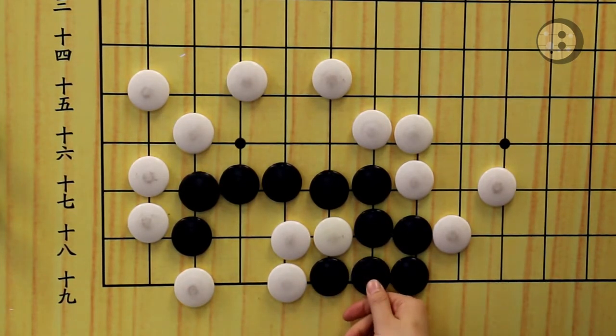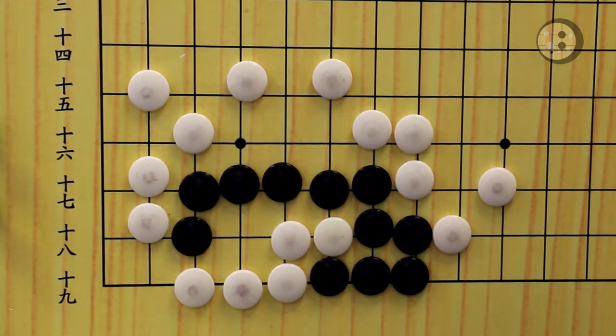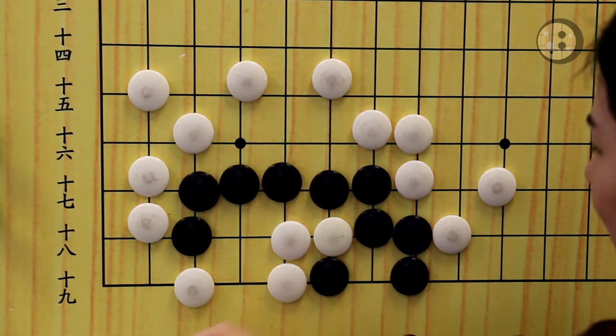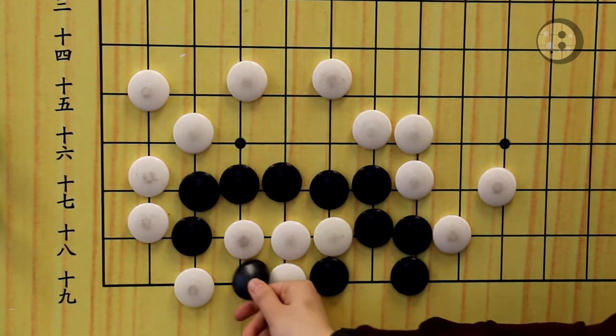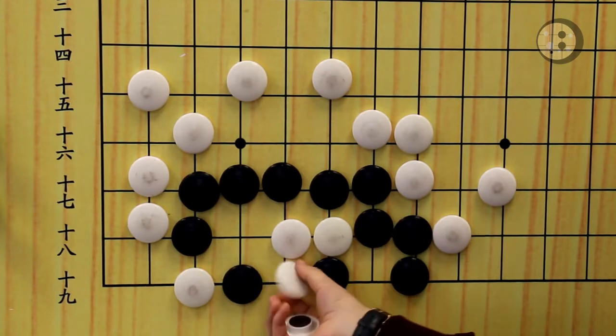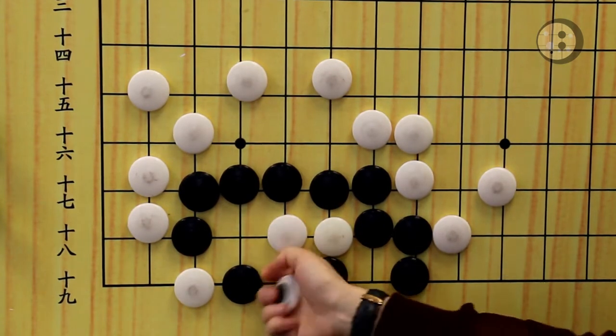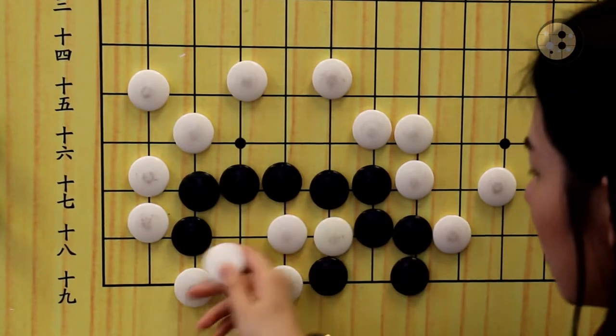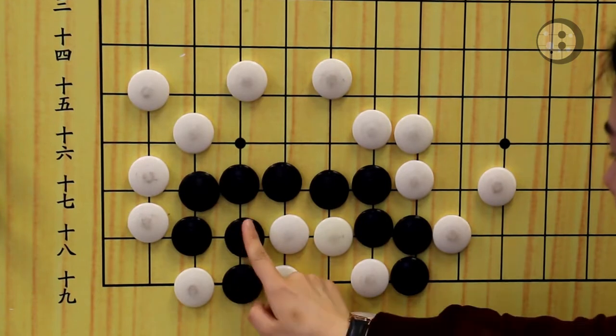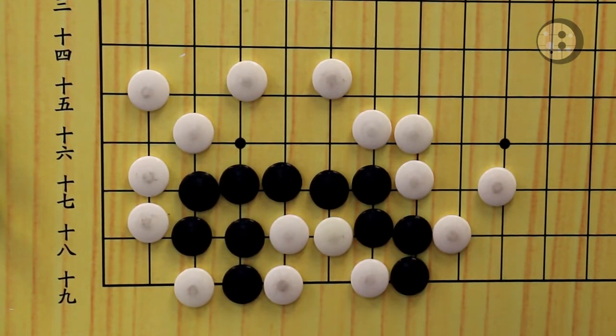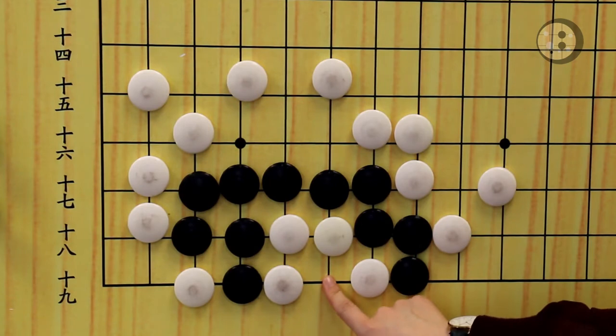If white wants to destroy the eye by atarying here, make sure you're not going to connect because that will be a mistake. White is able to connect these three stones, so black is dead now. Instead of connecting, you can throw in here and make white to a snap back. Now you can capture the four stones.